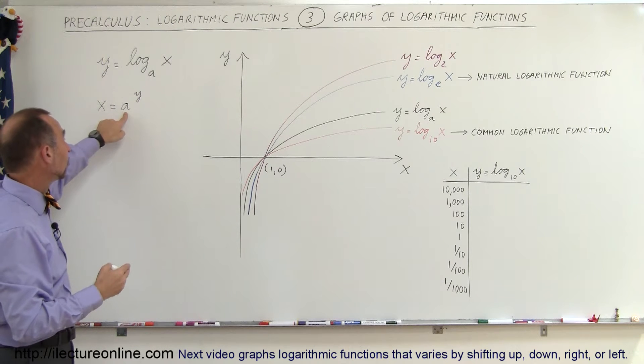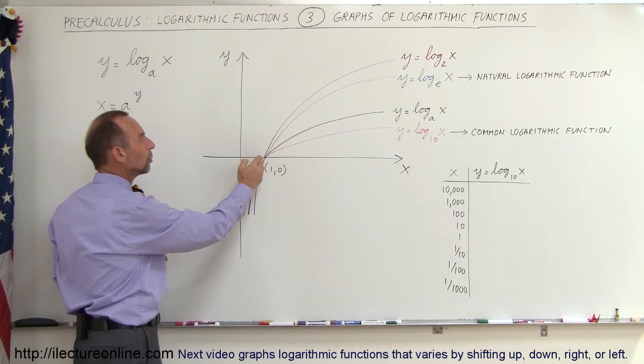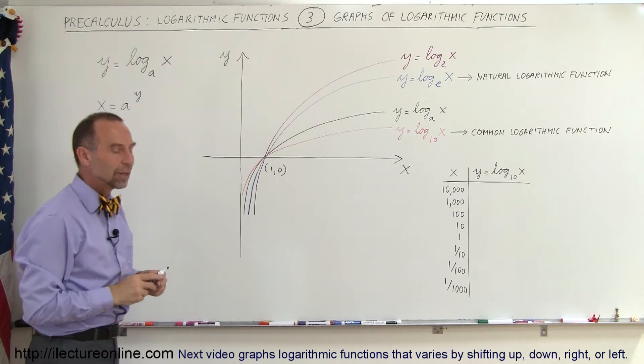Because anytime any base is raised to an exponent equal to 0, you always get 1. So, it doesn't matter what a is equal to, when y is equal to 0, x always has to be equal to 1.